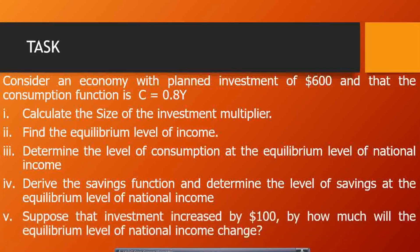Finally, suppose investment increased by $100 — by how much will the equilibrium level of income change? These are the same questions we answered in part one, except that in part one our consumption function had two parts: an intercept and an income-dependent part. In this model, we only have the consumption that depends on income.